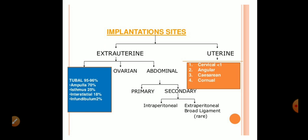There are extra-uterine and uterine implantation sites. First, tubal implantation accounts for 95 to 96 percent of cases. Within tubal implantation, we have further types: ampulla, which is the most common at 70 percent; isthmus; interstitial; and infundibulum. Second, we have ovarian implantation.